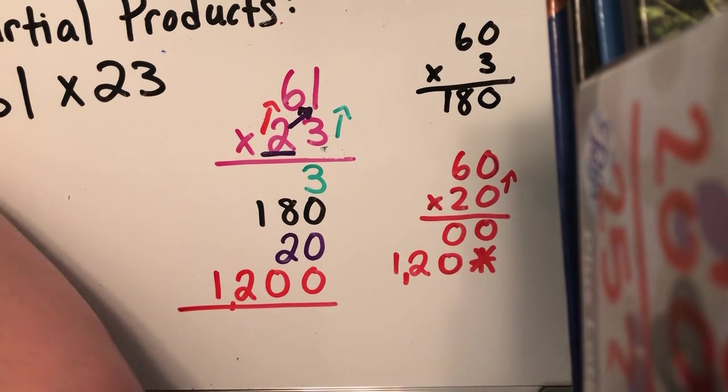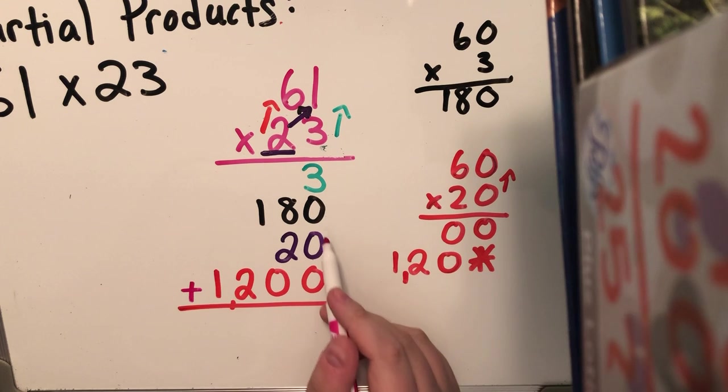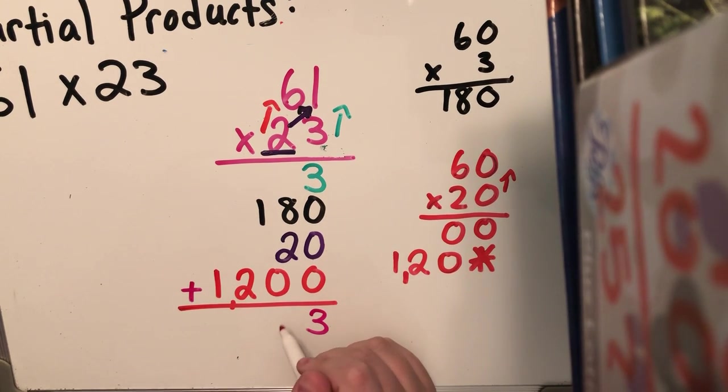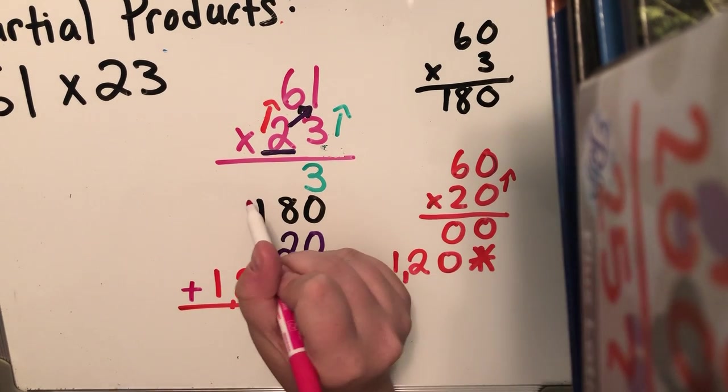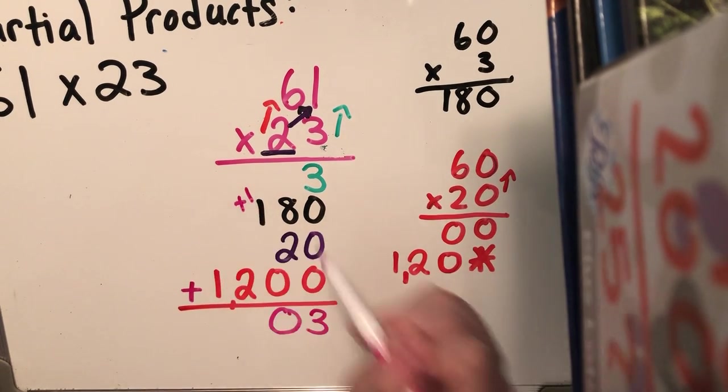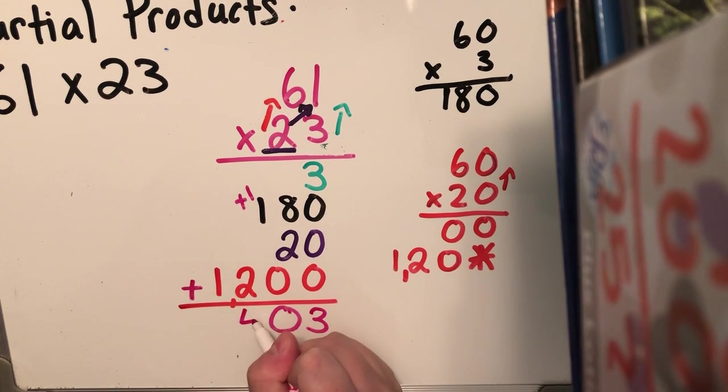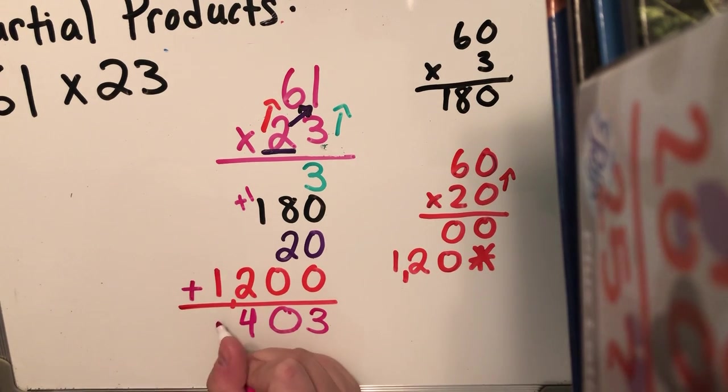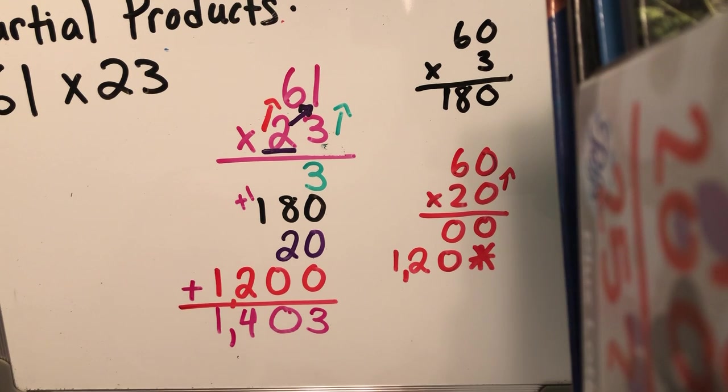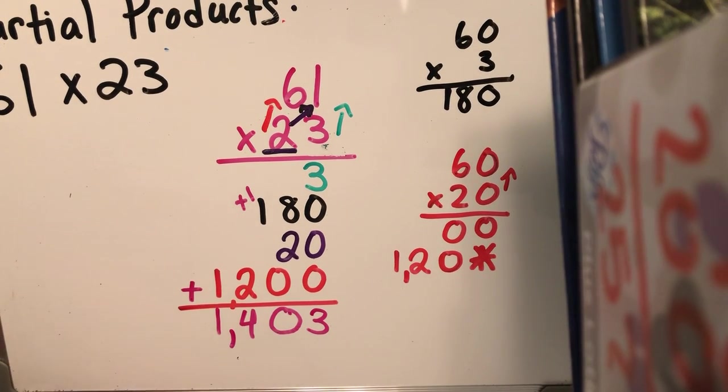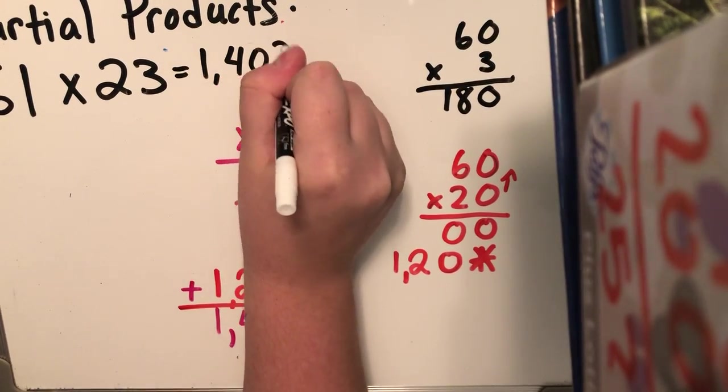So now what's gonna happen, just like we've been doing, you're gonna add everybody together. Three plus zero plus zero plus zero is three. Eight plus two is 10, plus another zero is 10. So I'm gonna put down that zero and I'm gonna carry and add the one. One plus one is two, plus the additional two is gonna give me four, and I have just one by itself. So I'm gonna get 1,403. So the product of 61 times 23 is 1,403.